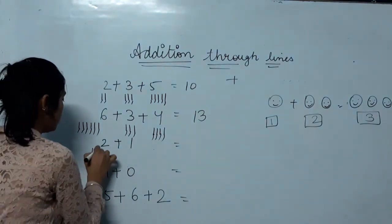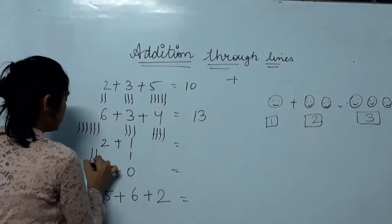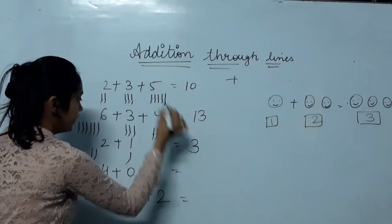Two and one. One, two, and one. One, two, three. So the answer will be three.